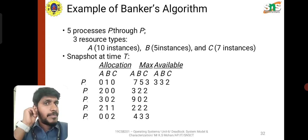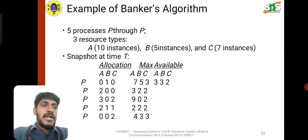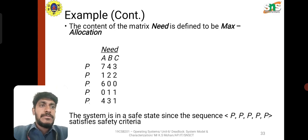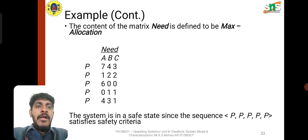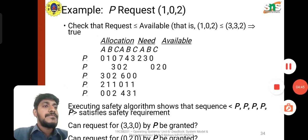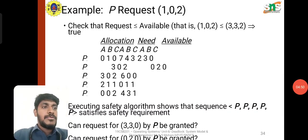In this example, we have 5 processes and resources: A with 10 instances, B with 5 instances, and C with 7 instances. The snapshot at a given time shows maximum and allocation values. The system is determined to be safe or unsafe based on whether the state satisfies the safety criteria — whether there exists a safe sequence among the processes P0 through P4.